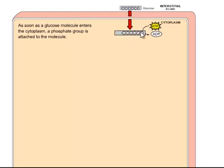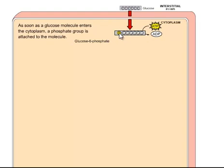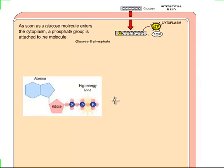Once this glucose enters the cell, the cell takes it and adds one phosphate molecule to carbon number six. If you count carbon one, two, three, four, five — that's carbon number six. The yellow shown here represents the phosphate attached to carbon number six.